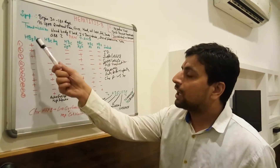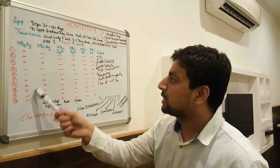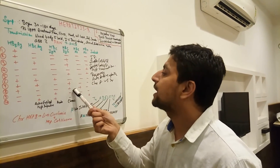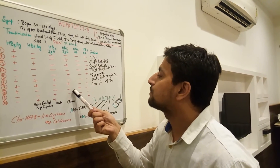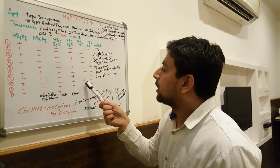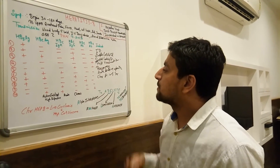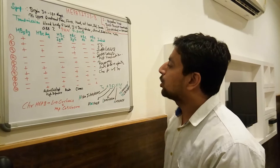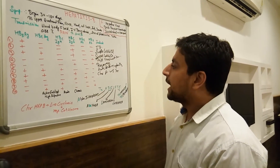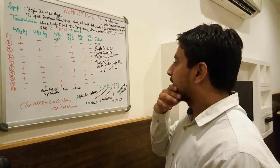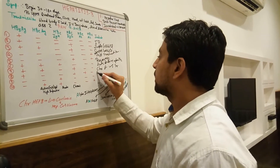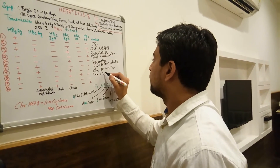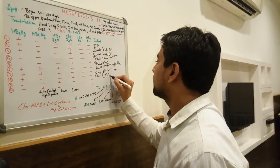If Hepatitis B surface antigen is positive, e-antigen is negative, IgM is negative, but Hepatitis B core IgG is positive and Hepatitis B surface antibody is positive — this indicates a chronic infection with mild liver disease.